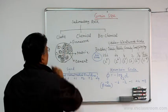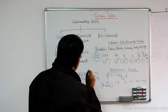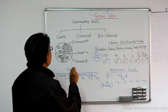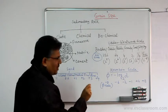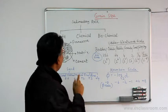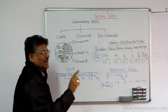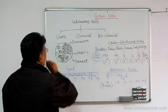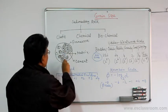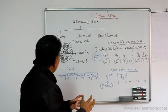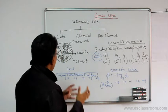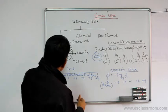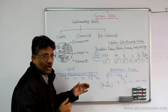What are clastic sedimentary rocks? These are rocks produced by erosion and weathering — the clasts that are transported and get deposited in a sedimentary basin. The individual grains accumulate at a certain place and then get consolidated in the form of a rock. That is what we call the clastic sedimentary rock.